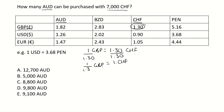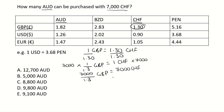Now we've got 1 CHF, but we want 7,000. So we're going to multiply by 7,000 on both sides. We end up with 7,000 CHF equals 7,000 divided by 1.3 GBP. Working this out, we get 7,000 CHF equals 5,384.62 GBP.